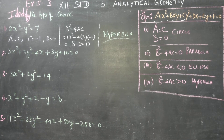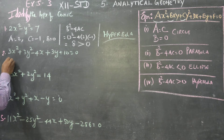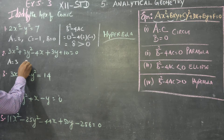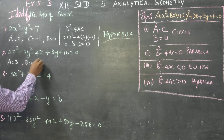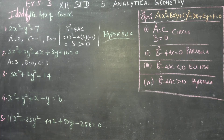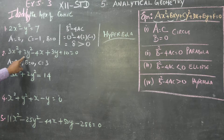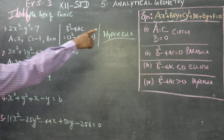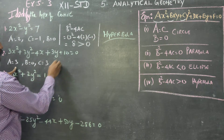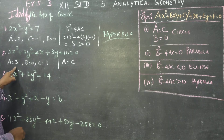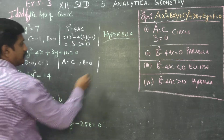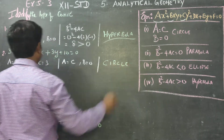Proceeding to sum number 2: my a is 3. There is no xy term, so b equals 0. There is a y squared term, so c equals 3. Checking the first condition: a equals c and b equals 0 — both are satisfied. Therefore, my answer is a circle.